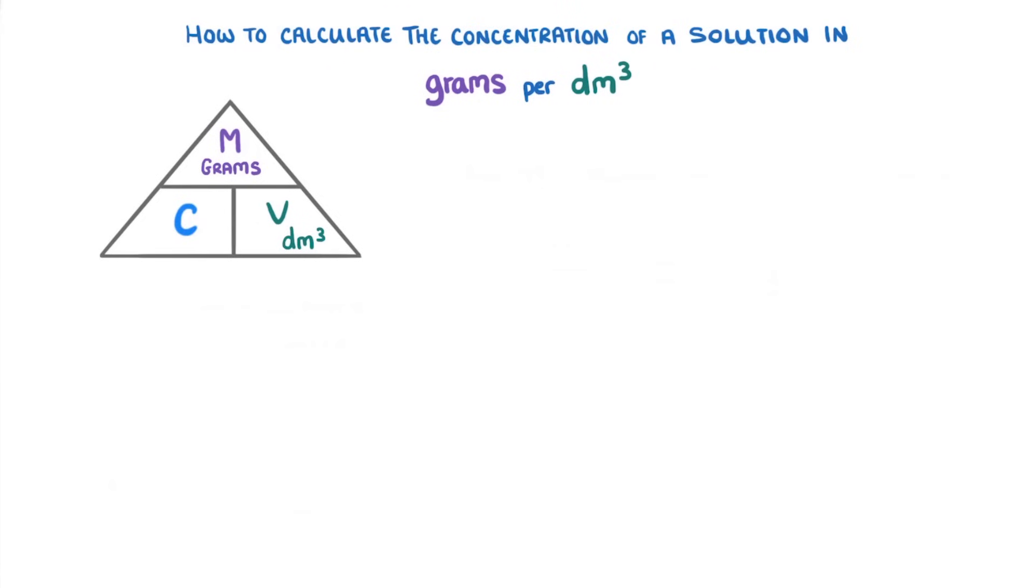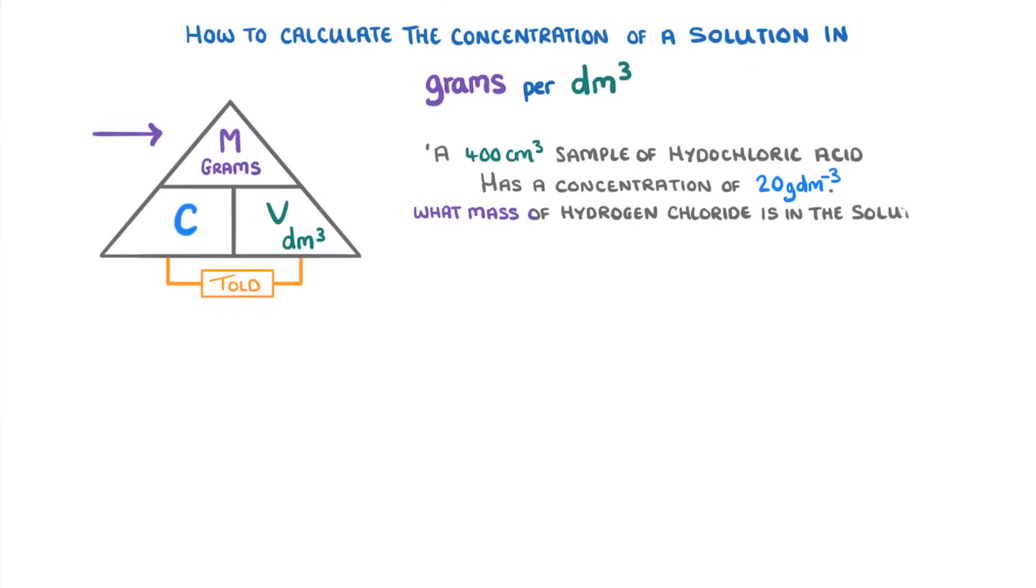Now we said at the beginning that we can also use this equation to work out the mass if we're told the concentration and volume. For example, a 400 centimetres cubed sample of hydrochloric acid has a concentration of 20 grams per decimetre cubed. What mass of hydrogen chloride is in this solution?